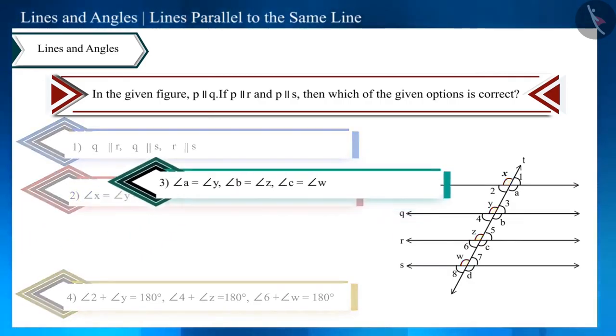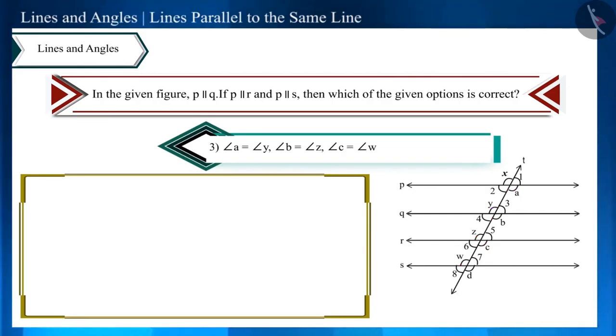Now look at the third option. Here these angles are equal to each other. Look at the figure carefully. These angles are pairs of alternate angles. And the pair of alternate angles are equal to each other. Therefore, this option is also correct.